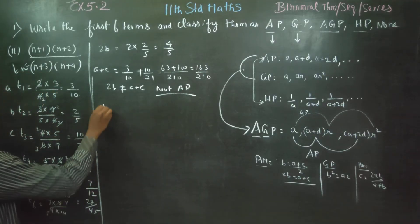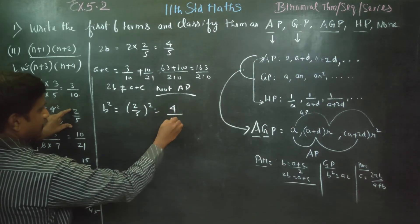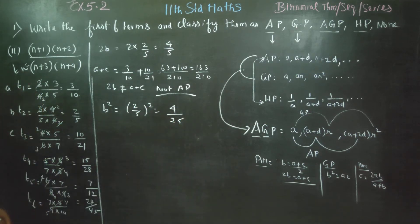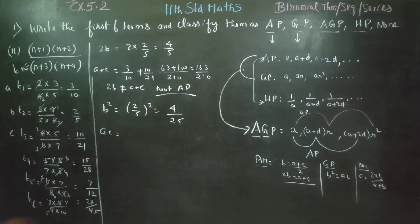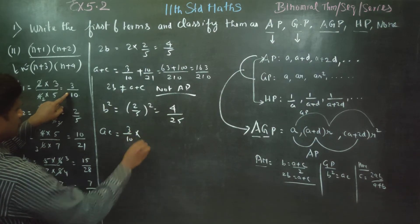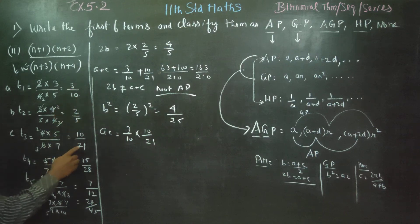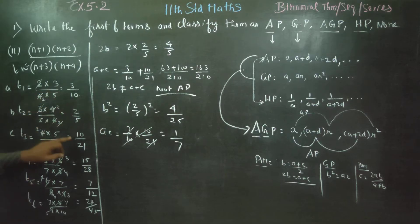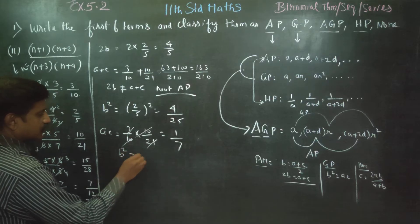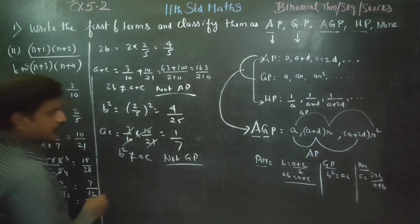So try GP: b² = (2/5)² = 4/25. Now a × c = (3/10) × (10/21). The 10s cancel, giving 1/7. So a × c = 1/7. Since b² = 4/25 is not equal to a × c = 1/7, therefore it is not GP.